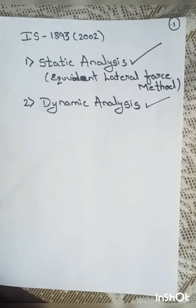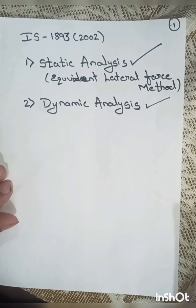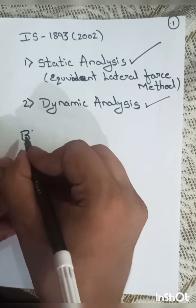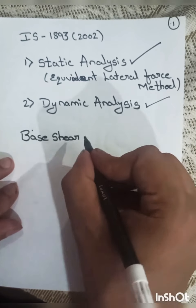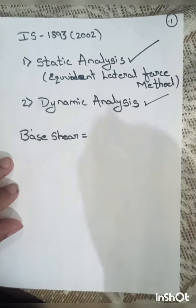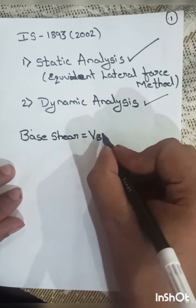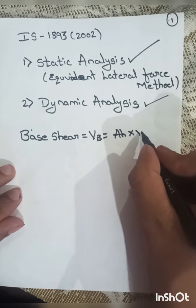The primary aim in analyzing an earthquake-resistant structure is to find the base shear. With the base shear, we design the structure — that is, to provide the steel and all. As per IS 1893:2002, the base shear is denoted by Vb, which is given by: Vb = Ah × W.